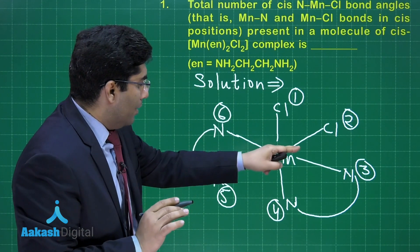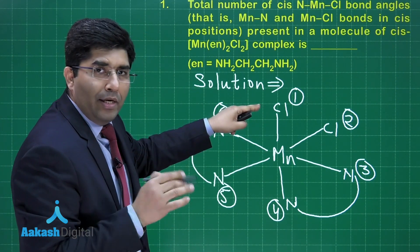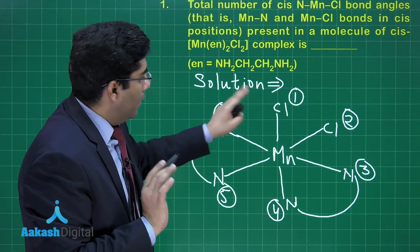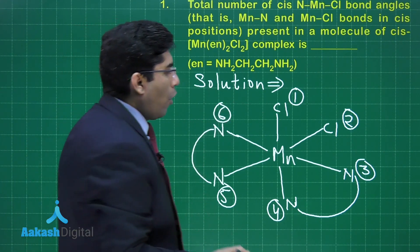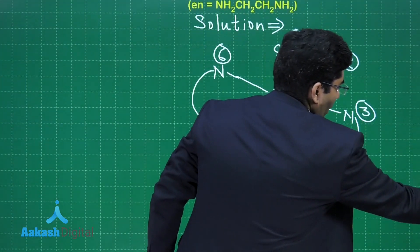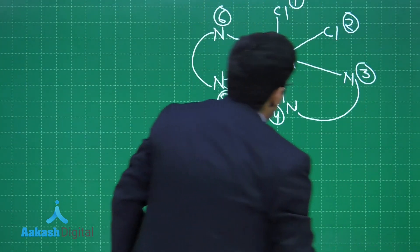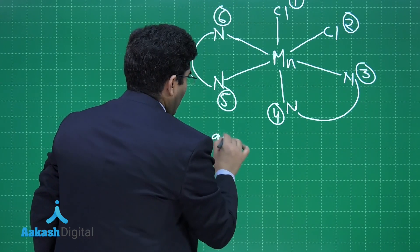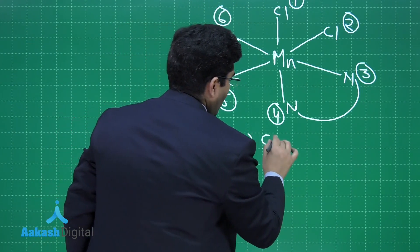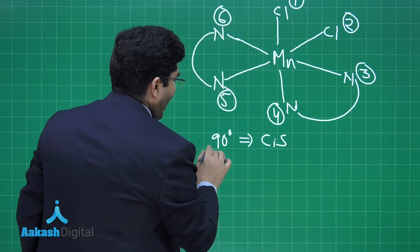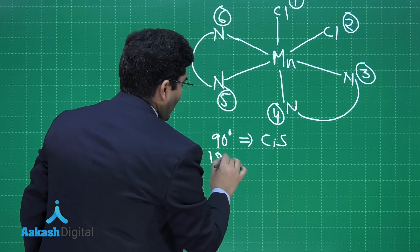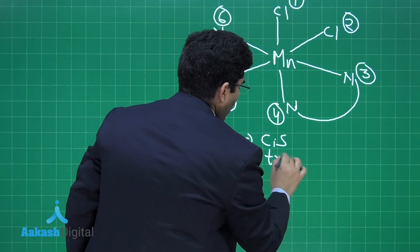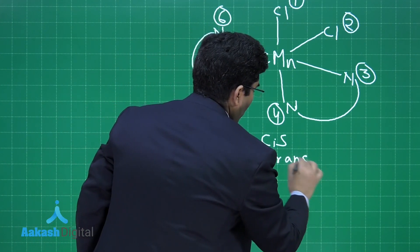Now, I am not taking 3-Mn-1. It is obvious that it is 3-Mn-1. We all know that if the angle between two ligands is 90 degrees, then it is cis, and if it is 180 degrees, it will be trans.